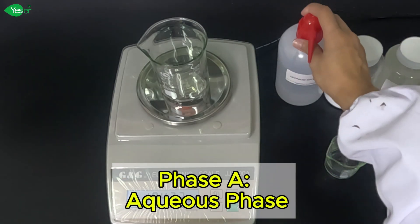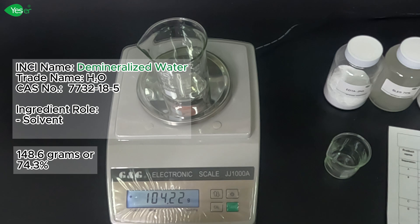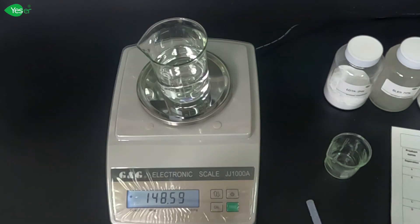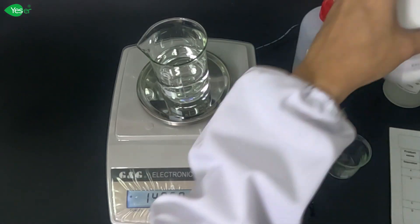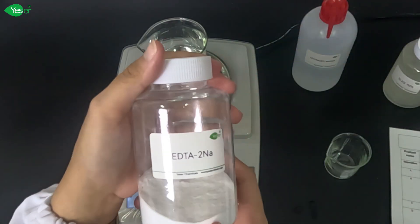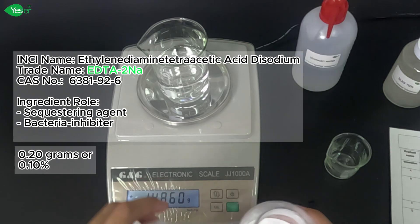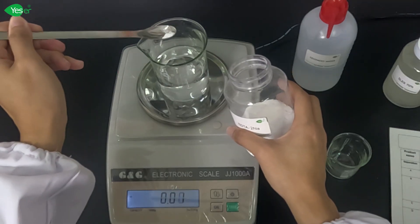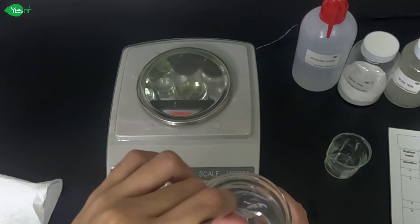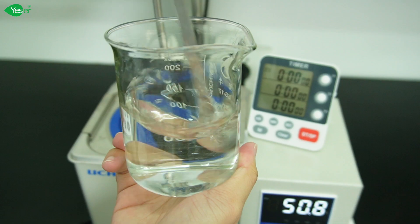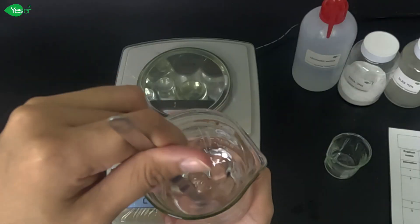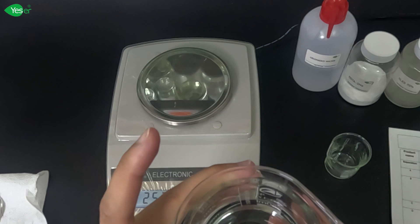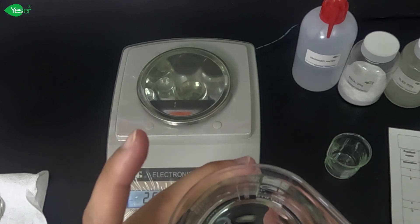First, we will measure 148.6 grams of ionized water, 74.3% for the formula. Next, let's add our chelating agent EDTA disodium. Weigh 0.2 grams of this, 0.1% for the formula. Stir this until it is fully dissolved. Now that our EDTA has been fully dissolved, we will heat this aqueous phase in a water bath at 60 degrees Celsius.